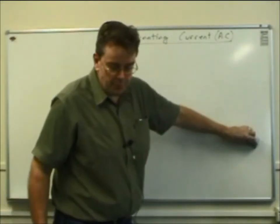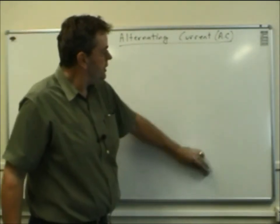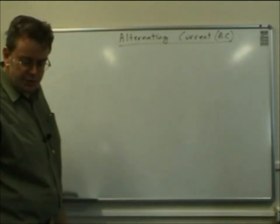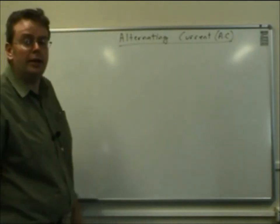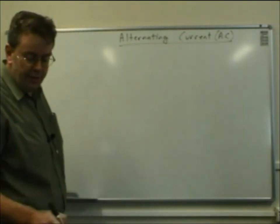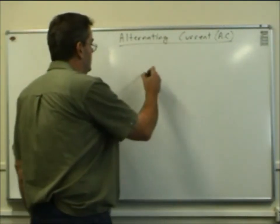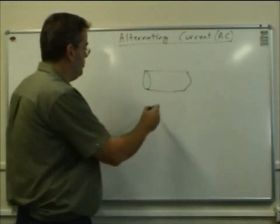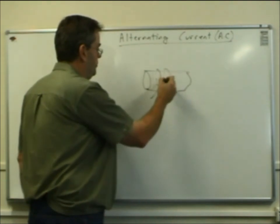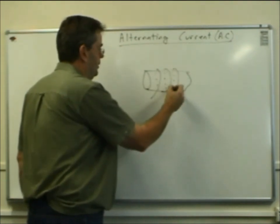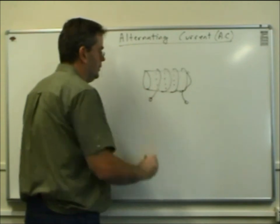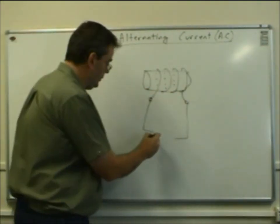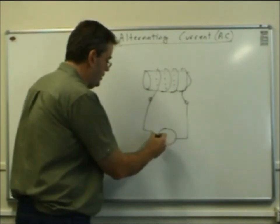There's a nice picture on the front page of the study guide - the eighth one in the series - showing how you can generate an alternating current voltage. That's done with a tube of some sort, like a toilet roll, with wire wound around the outside. Connect that up to a centre-zero metre - what that means is...